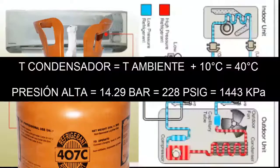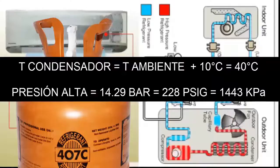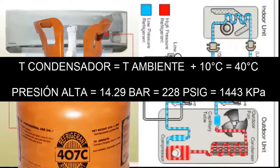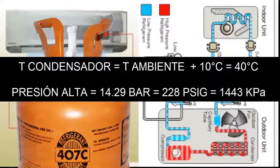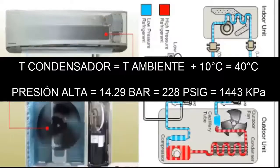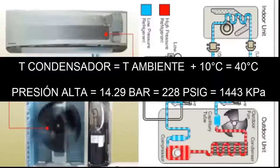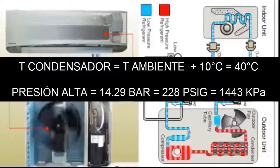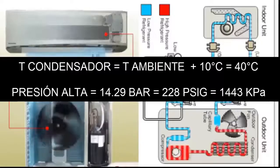For an outdoor environment temperature of 30 degrees Celsius, the condenser temperature is usually about 10 degrees Celsius above the ambient environment where the equipment is located. Thus, in the table for 40 degrees Celsius, about 104 degrees Fahrenheit, the high gauge pressure in the condenser is 14.29 bars, equivalent to 228.88 psi or 1443.29 kilopascals.